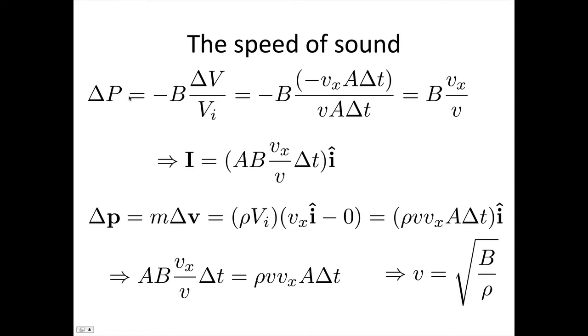But from before, we know that delta P is equal to minus B times the change in volume over the initial volume. So that's minus B. Now, the change in volume, we said, it was minus Vx A delta T, and the initial volume was just the V A delta T. So the A's will cancel out and we'll end up with B Vx on V.